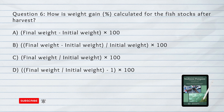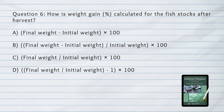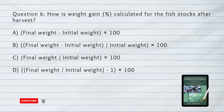Number 6. How is weight gain percentage calculated for the fish stocks after harvest? A. The difference between final weight and initial weight, multiplied by 100. B. The difference between final weight and initial weight, divided by initial weight, multiplied by 100. C. The quotient of final weight and initial weight, multiplied by 100. D. The quotient of final weight and initial weight, minus 1, multiplied by 100.